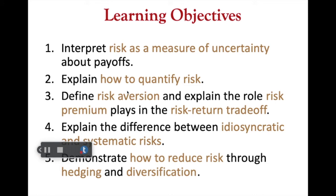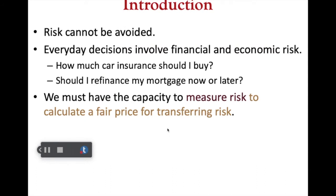We will start today by talking about risk as a measure of uncertainty — how we try to measure and quantify uncertainty. Then we will talk about risk aversion, risk premium, and the so-called risk-return trade-off. Later we will talk about idiosyncratic and systematic risk, and how we can reduce risk, especially using hedging and diversification.